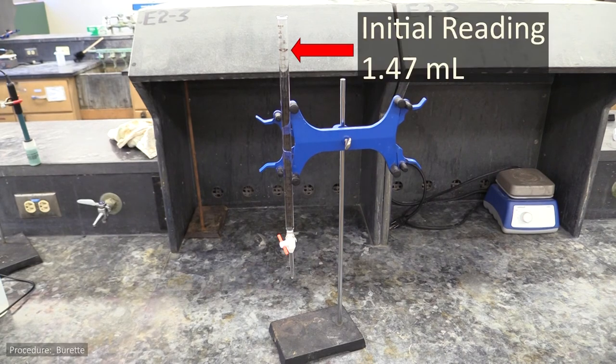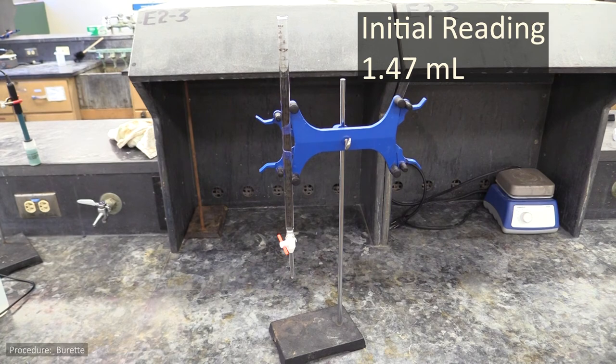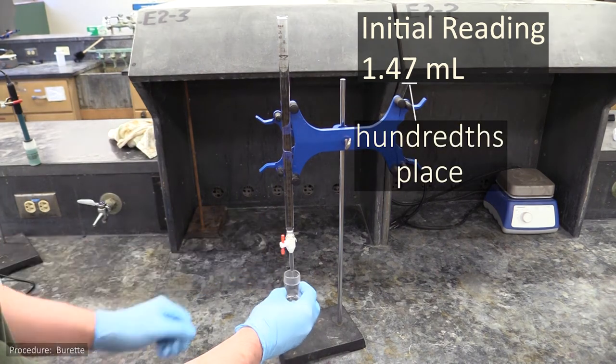Since the burette's physical markings go up in increments of 0.1 milliliters, you'll read to the nearest 0.01 milliliters, in other words, to the hundredths place, by interpolation.